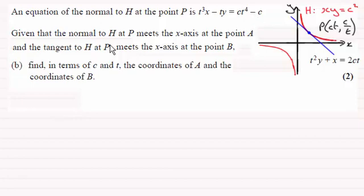And we're told now that this normal at H at P meets the x-axis at the point A, and the tangent to H at P meets the x-axis at the point B. Remember in the previous part of the question, we found out that the equation of that tangent was t squared y plus x equals 2ct. So we've got to find in terms of c and t the coordinates of the points A and B.